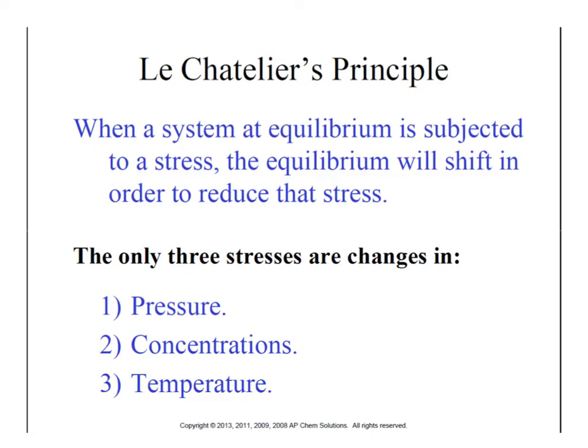With a system at equilibrium, if you stress that system, it will cause equilibrium to shift in order to reduce that stress. Chemicals are a lot like us — they don't really like stress, and so if they're stressed out, they're going to do things to relieve that stress. Just like your little brother stressing you out so you go to your room, or your job stressing you out so you change jobs — chemicals feel stress and shift equilibrium. And while your teenage self has a billion different stressors, chemicals only have three: pressure, concentration, and temperature.